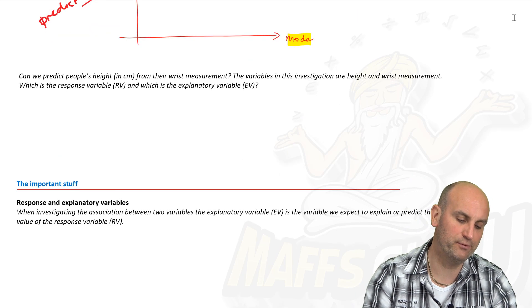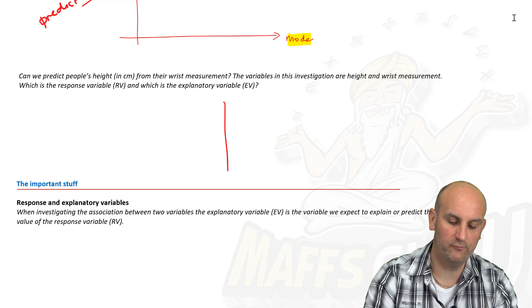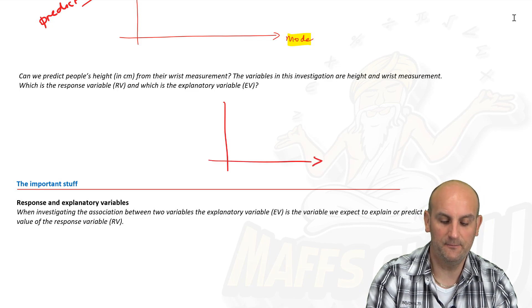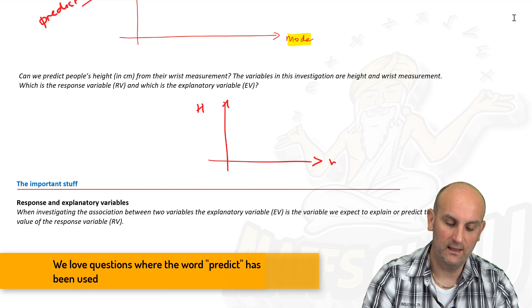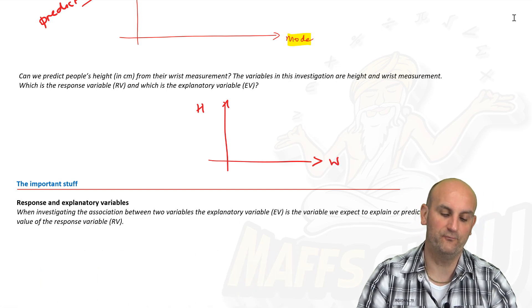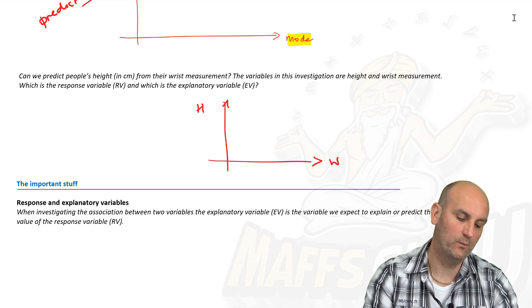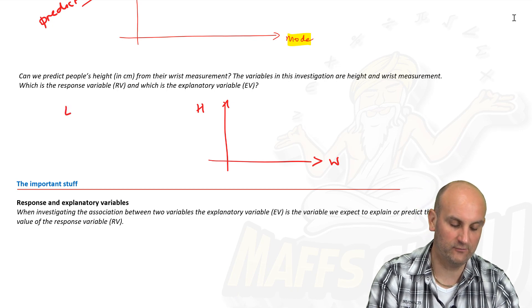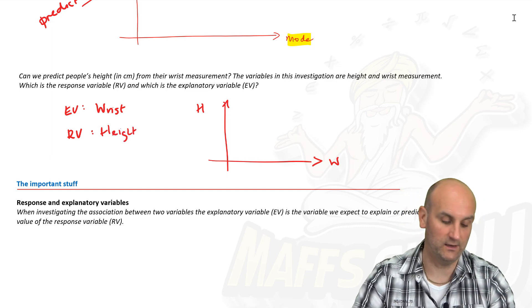And likewise, can we predict people's height from their wrist measurements? Now the great thing is the minute they've said the predict word, I know that I'm going to have height here and I'm going to have wrist there. The variables in investigation are height and wrist. Which is the response variable and which is the explanatory? Well in which case, the explanatory variable in this situation would be wrist and the response variable would be my height taken from that. And basically that's almost the end of this video.